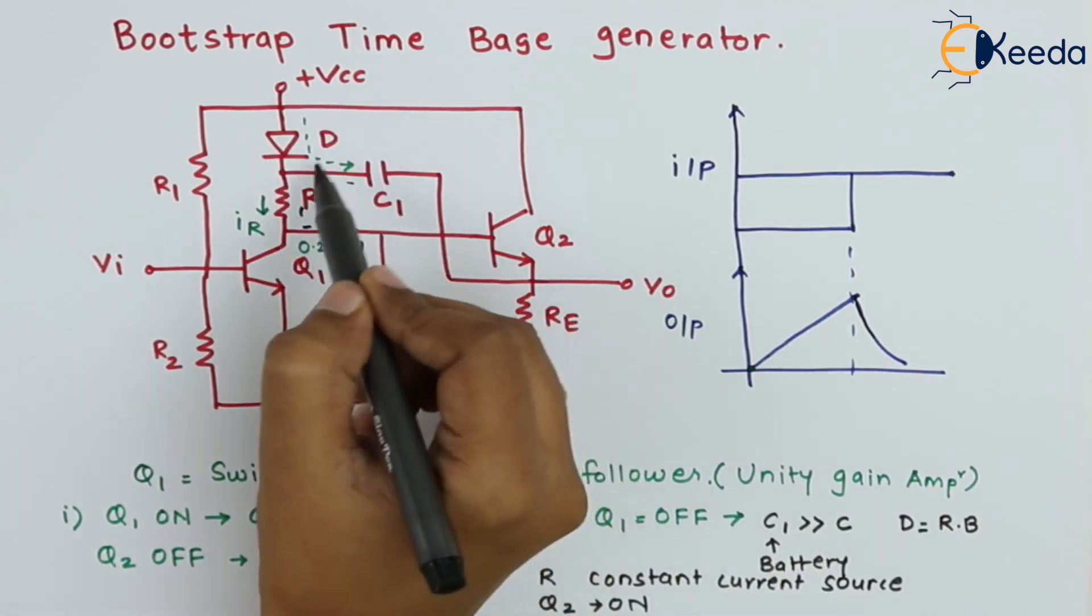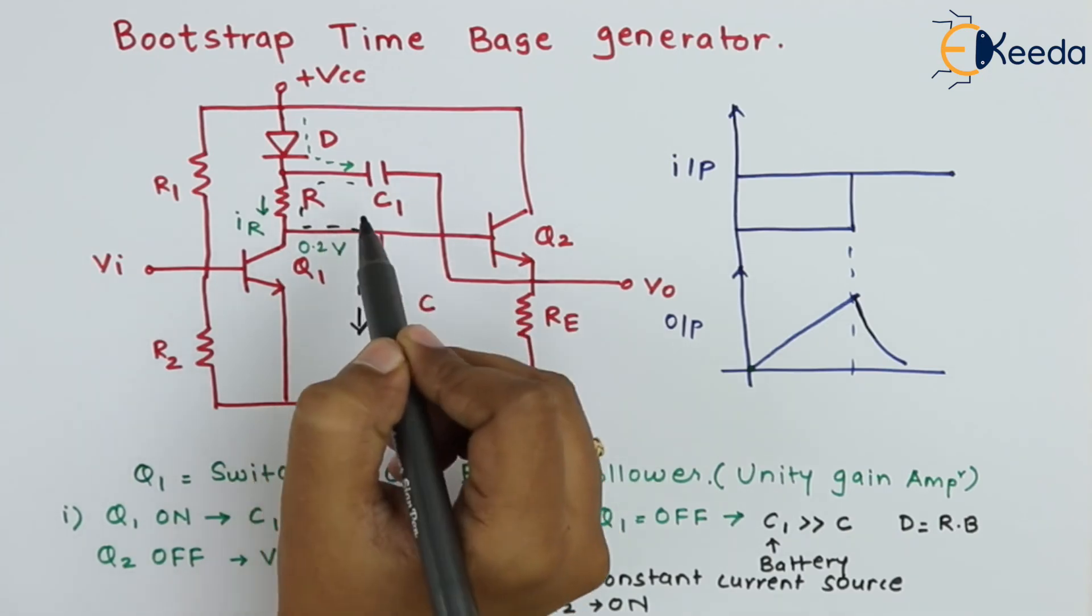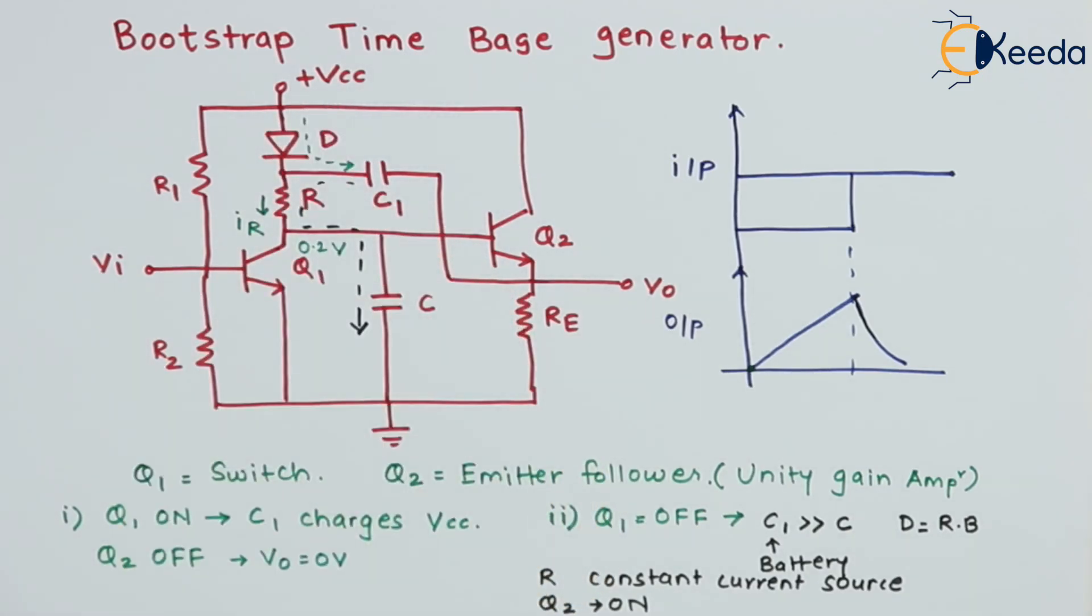And at that time, the diode will be forward biased and it will charge the capacitor C1 up to the maximum value, that is VCC.